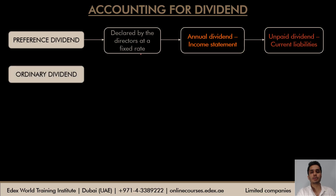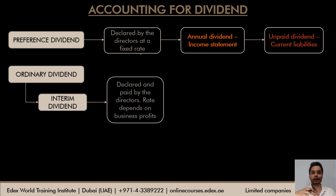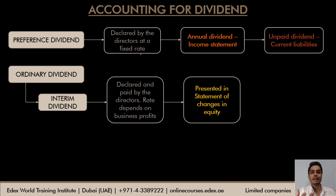After preference dividend, the company pays dividend to ordinary shareholders, divided into two categories. The first is interim dividend — declared in the middle of the year by directors when the company is doing well and earning good profits. Interim dividend is declared and paid by directors without needing shareholder approval. The rate depends on business profits, and it is deducted from retained earnings in the statement of changes to equity.